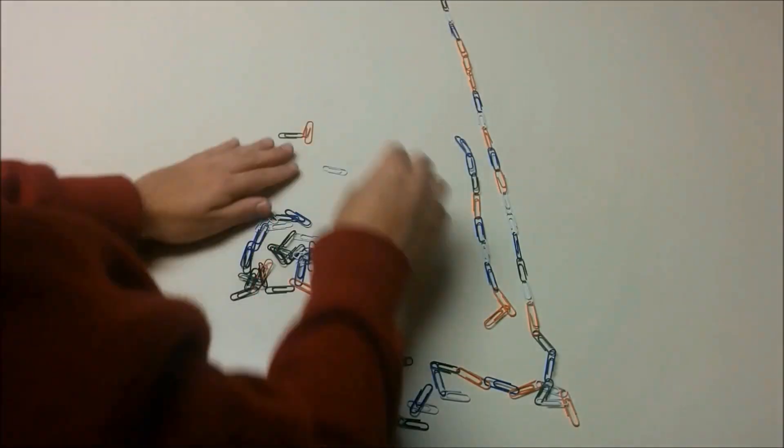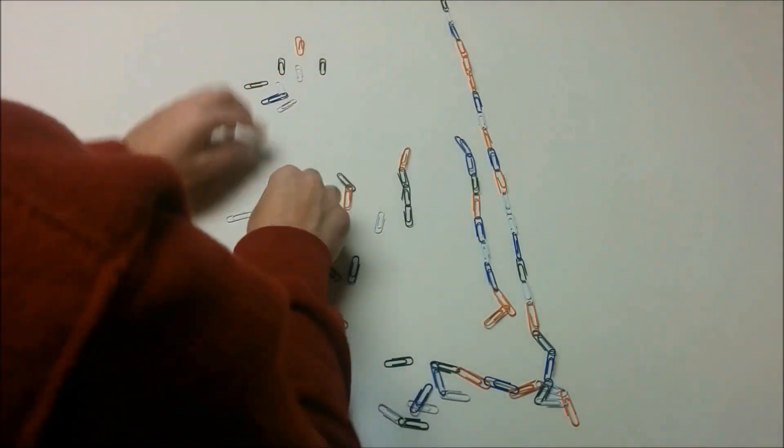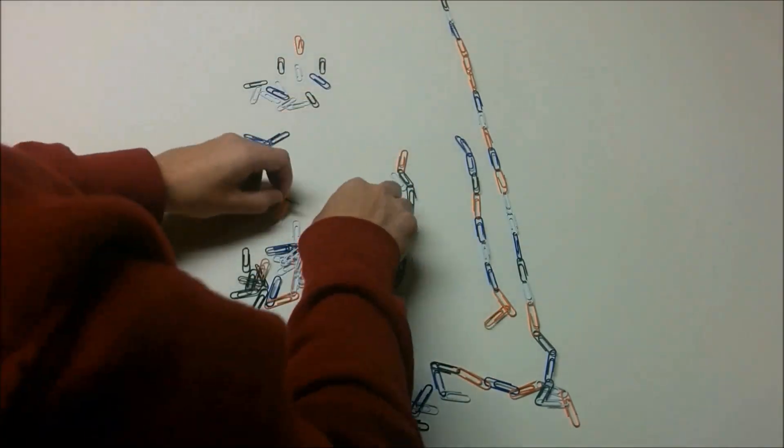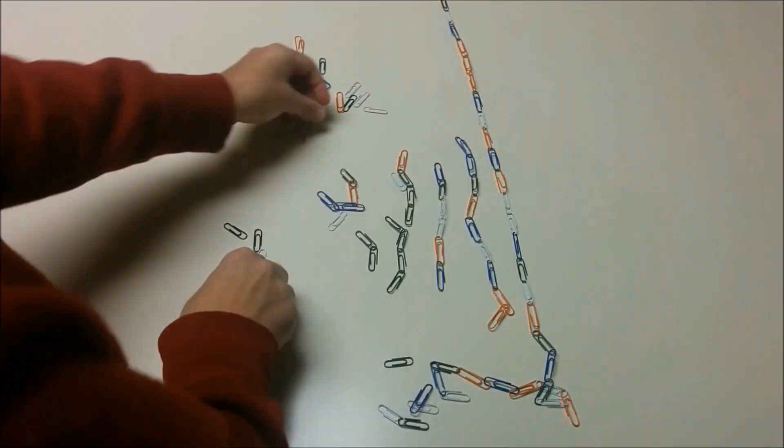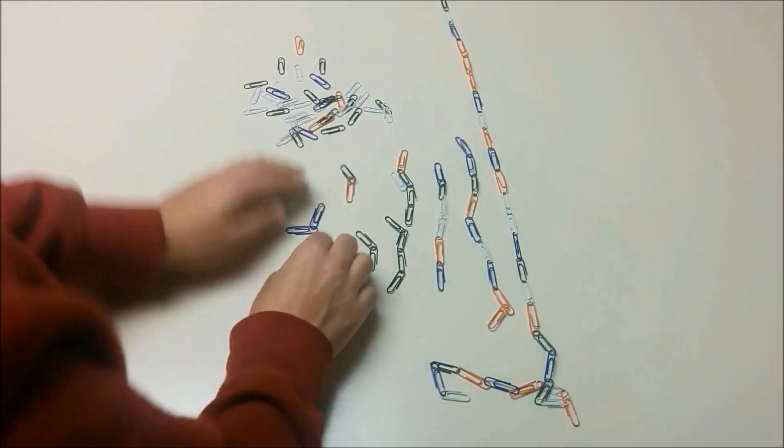After we repeat this experiment over and over again, we can look at the distribution of paperclip chains. Because the longer chains are more likely to get picked, this is an example of how the rich can get richer.